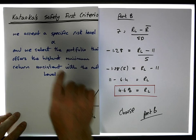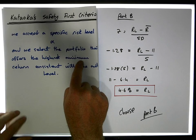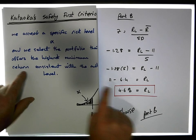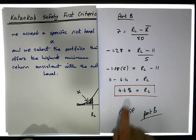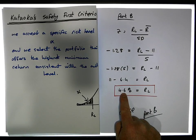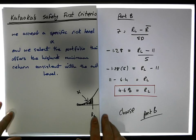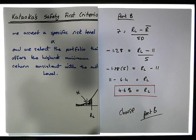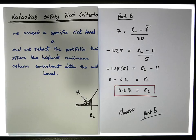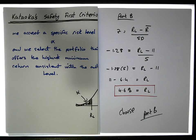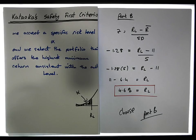We choose Portfolio B based on Kataoka's criteria, which tells us to select the portfolio that offers the highest minimum return consistent with the risk level — in this case calculated with 10% of the area to the left-hand side. This is the one that has the highest return consistent with that risk level. Once again, this was Jonathan Lambert with the Mathematics Development and Support Service at the National College of Ireland. I hope this video was intuitive and helpful. Thanks for watching.